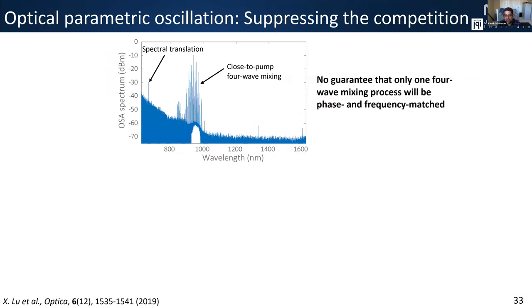When we tried to drive our devices into parametric oscillation right away based on those photon pair sources, instead of generating a clean spectrum with one signal and one idler, we instead create all these different parametric sidebands near the pump. This is perhaps not surprising because so far we just care about three modes — and this neglects the fact that competing processes might also be phase and frequency matched, and might be more efficient. There's going to be some reason to preferentially select processes close to the pump instead of the widely separated process we might be interested in.